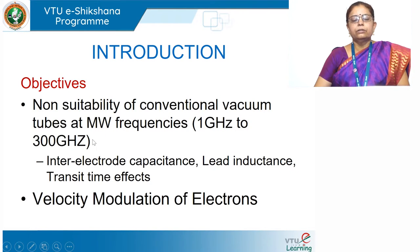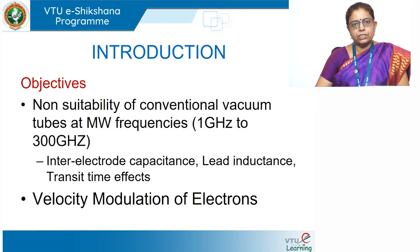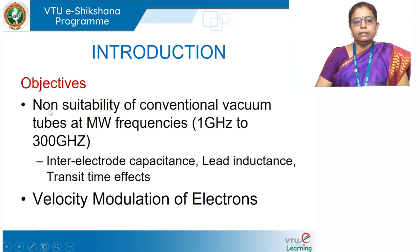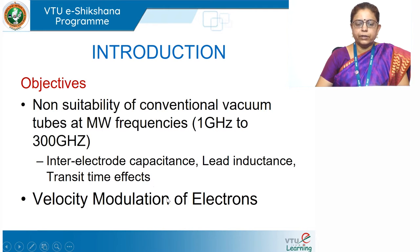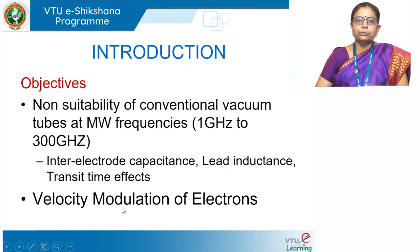The objectives of this study are to find out why conventional vacuum tubes used at low frequencies are not suitable at the microwave range. We need to look at modifications in their construction, and we also need to see a new concept called velocity modulation of electrons. Modulation means changing the carrier frequency, amplitude, or phase with respect to the message signal.